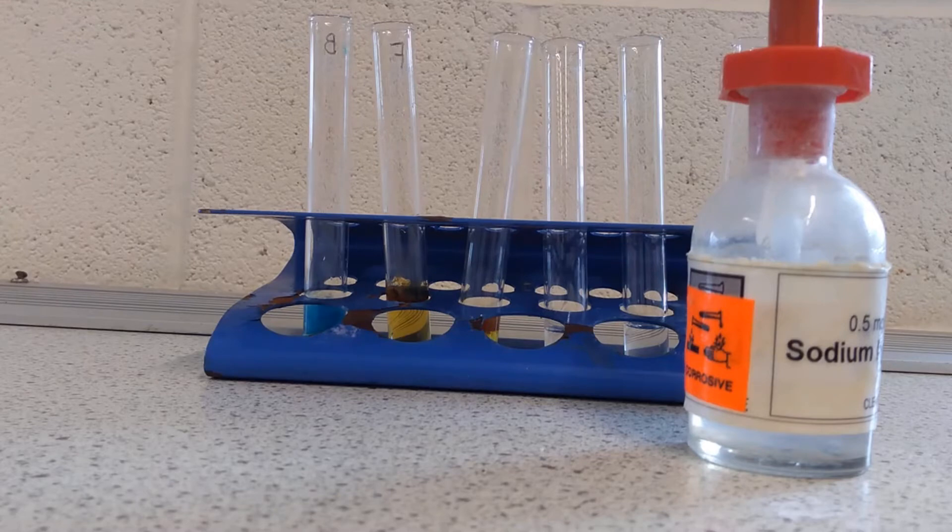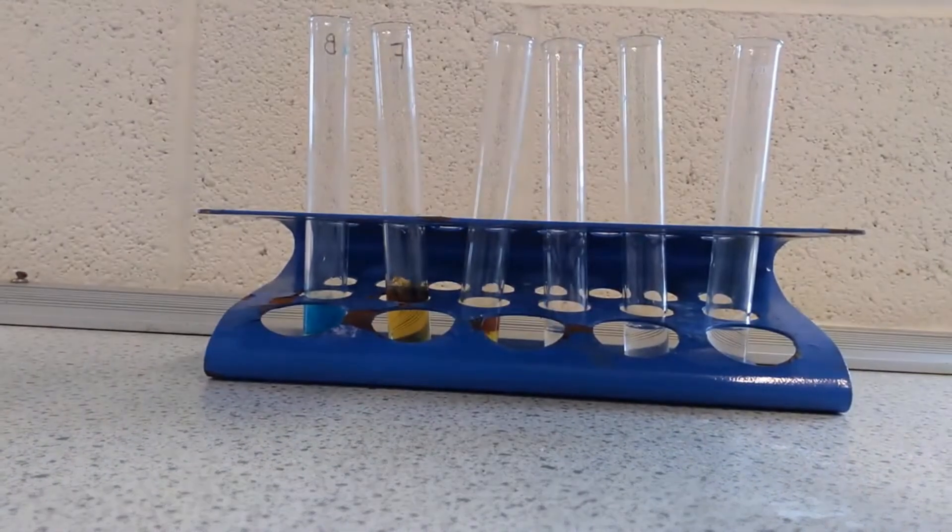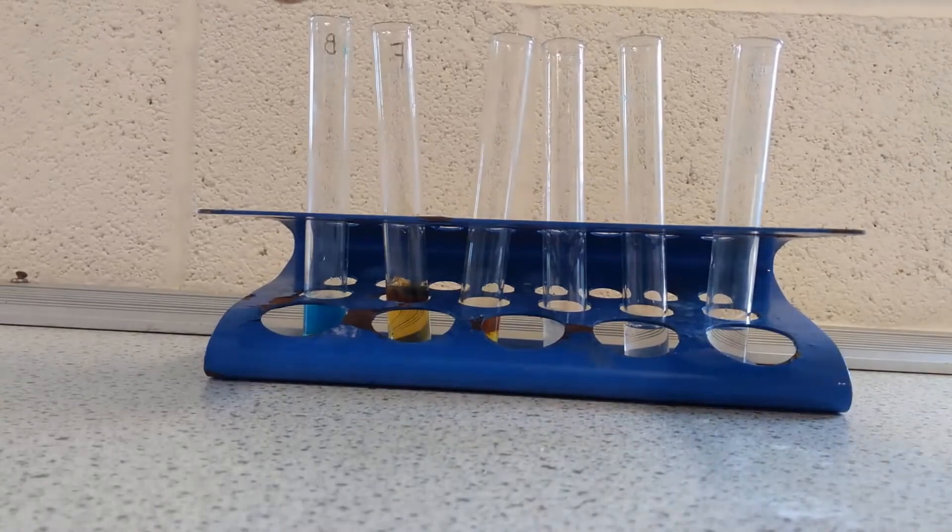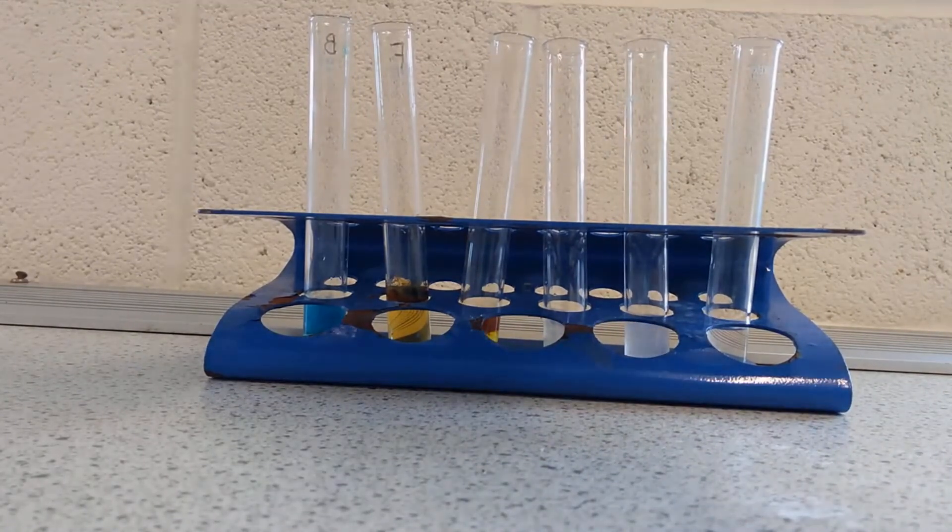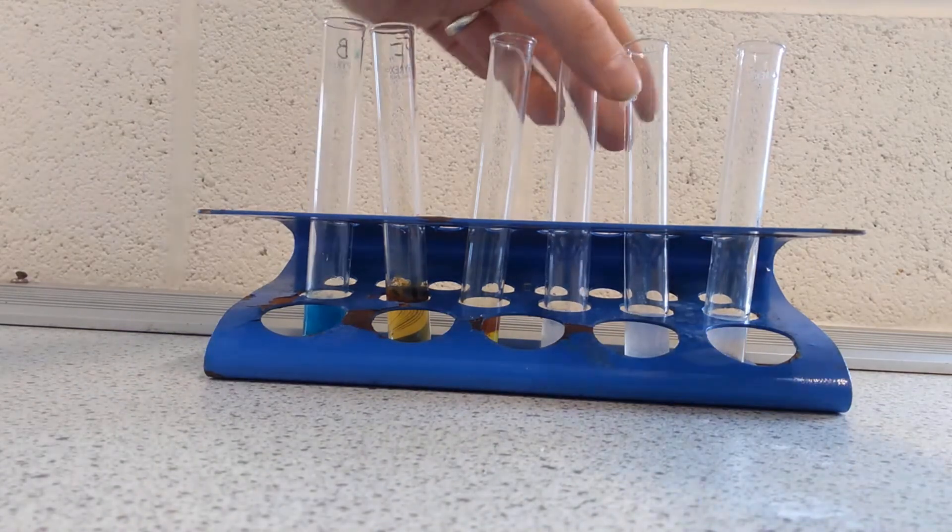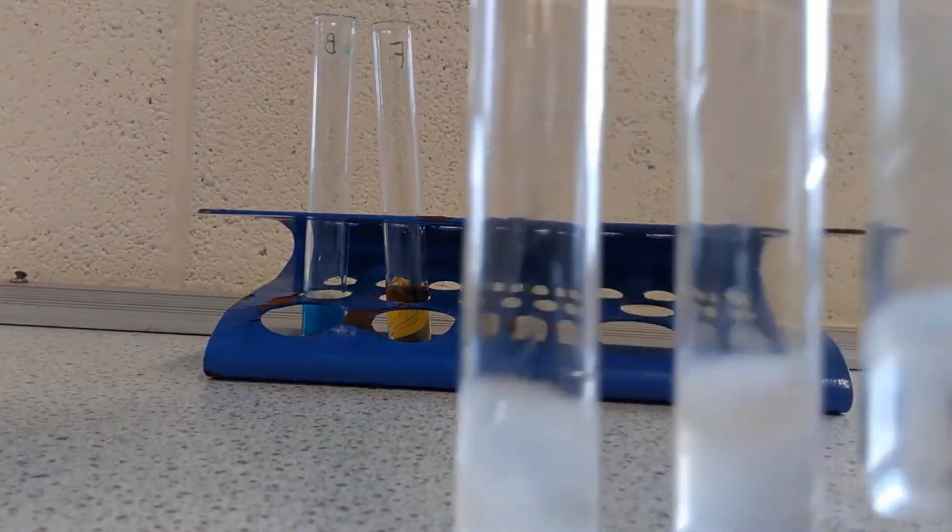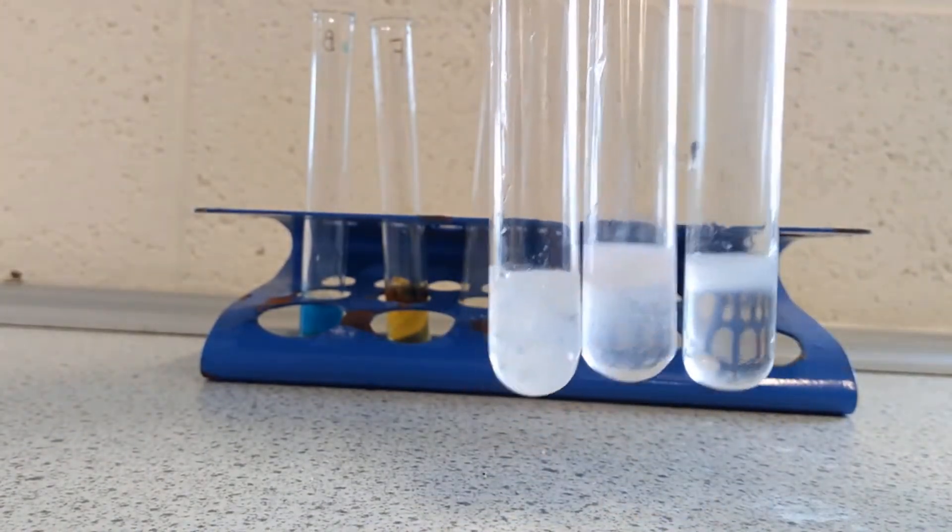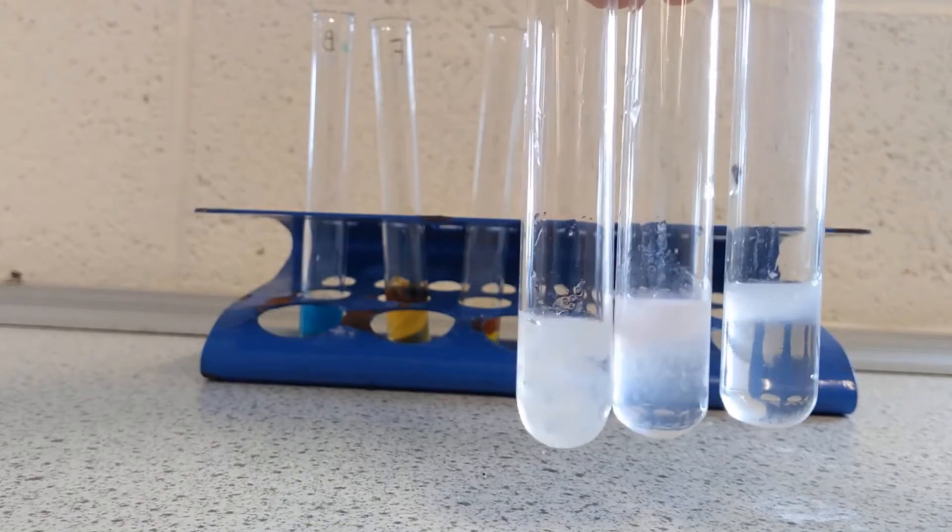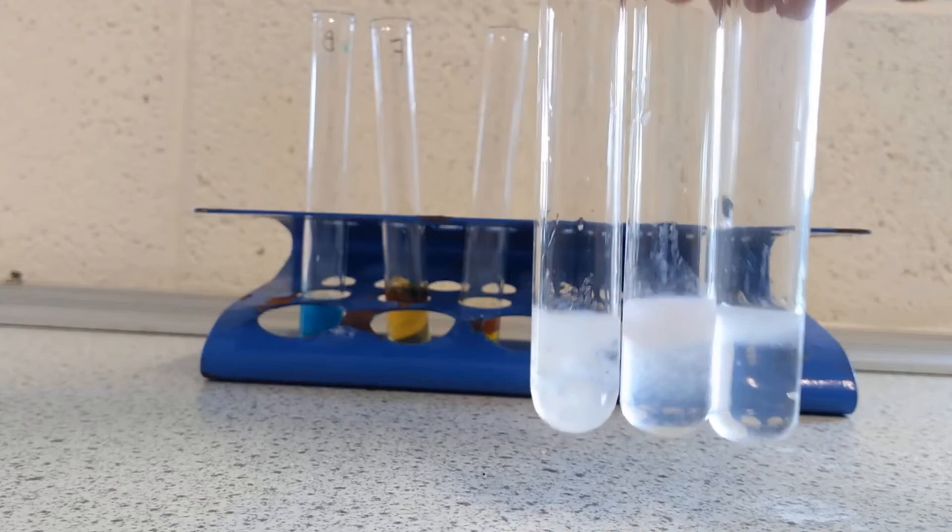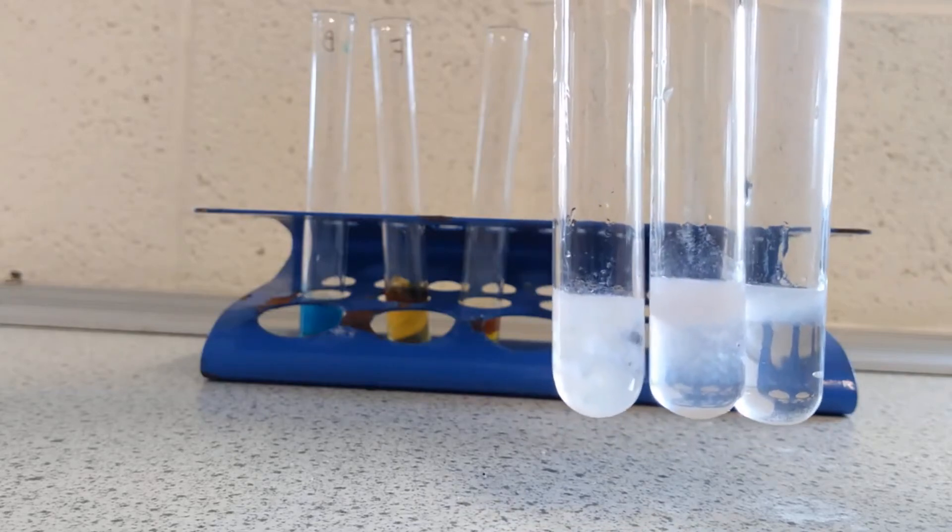Now my last three are a little bit harder to tell the difference between because they all form white precipitates. So these are calcium and magnesium and aluminium salts, and you can see they don't look identical to each other, but they are all forming a white precipitate. So that's not hugely useful. It means I can tell that it's one of the three, but I can't tell which one it is.